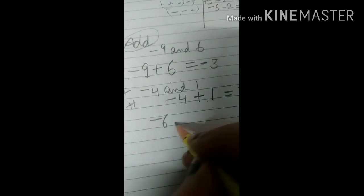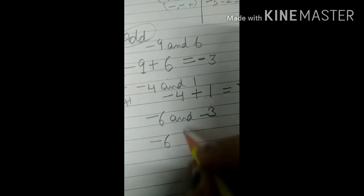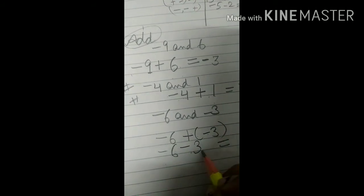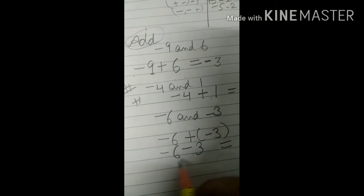Here you can see one more: minus 6 and minus 3. You have to add these two numbers — minus 6 plus minus 3. Two signs come together: plus and minus gives minus, and then minus minus gives plus. The sign comes from the bigger number, which is 6, and in front of 6 there is minus, so minus 9 is your required answer.